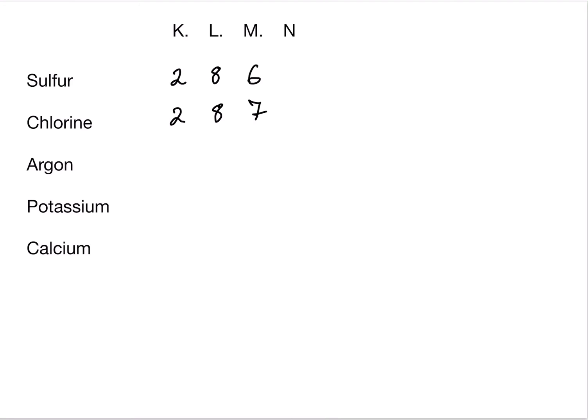Argon, another noble gas, has an atomic number of 18, so 2, 8, and 8. We can't put 9 in the last shell because the last shell cannot have more than 8. So argon has a stable electronic configuration.